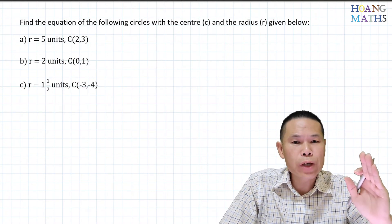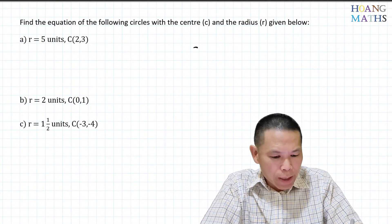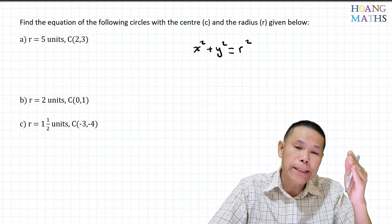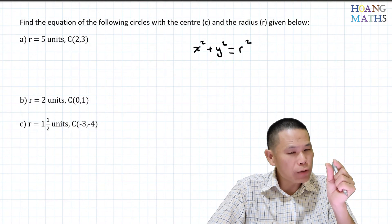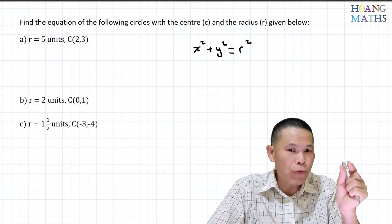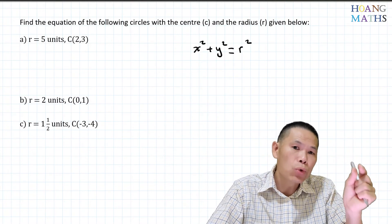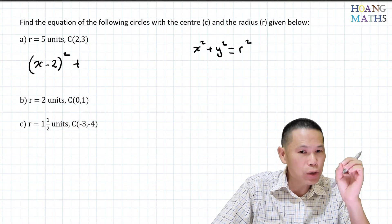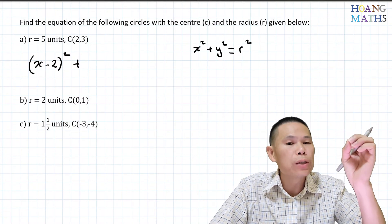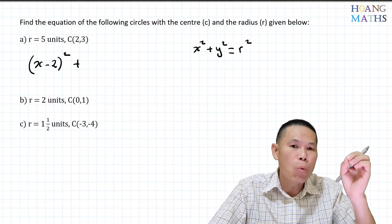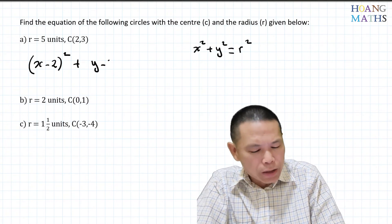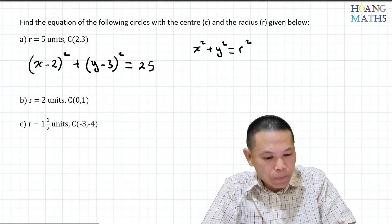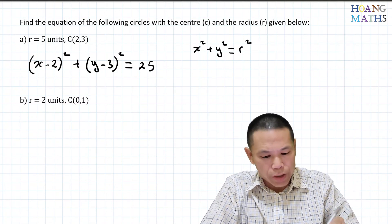Let's go through this together. Starting from x squared plus y squared equals r squared, for center (2, 3): the x value moved two units to the right, so instead of x squared we write (x minus 2) squared. For y, it moved up three units, so instead of y squared it becomes (y minus 3) squared. The radius is 5, so we square 5 to get 25. The equation is (x−2)² + (y−3)² = 25.